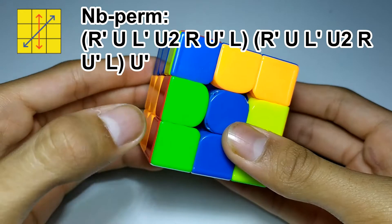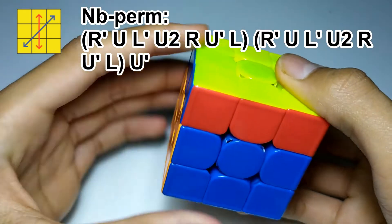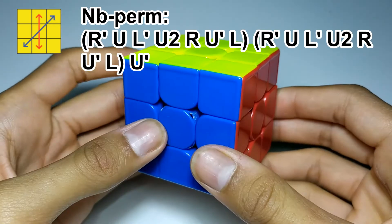Take this pair out, take this pair out, separate them, and then L. And then just U' to finish it off.